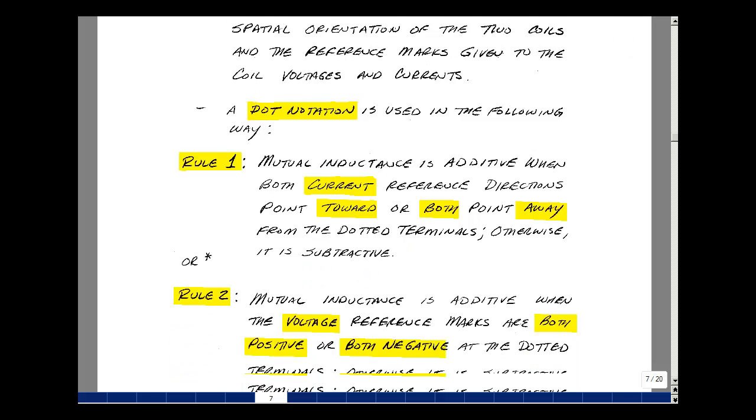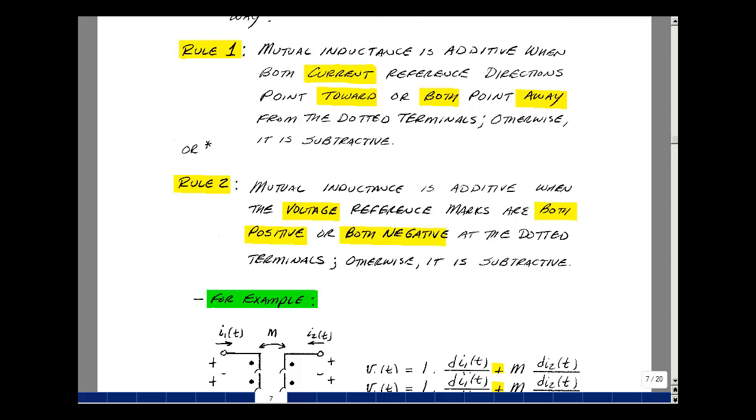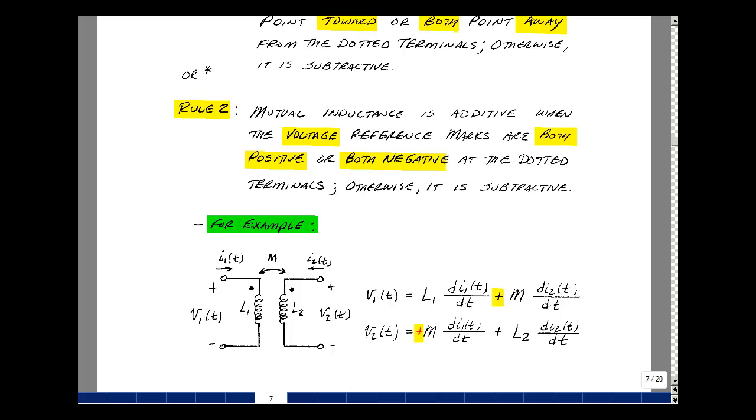We could also do it with voltage. Now let me read rule two. Mutual inductance is additive when the voltage reference marks are both positive or both negative at the dotted terminals. Otherwise it's subtractive. Let me show you what that means on a coil right here.